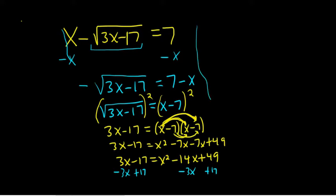I'm going to come over here. So these cancel, these cancel. So we're left with x squared minus 17x. And then 17 plus 49, that should be, so 7 plus 49 is 56. It should be 66. And that's equal to 0.